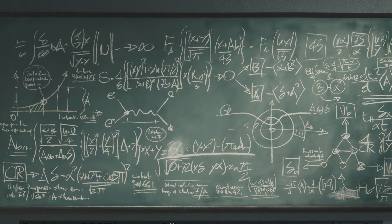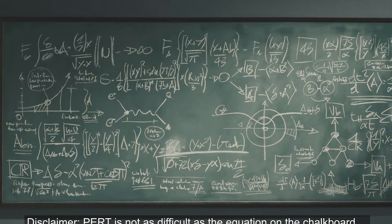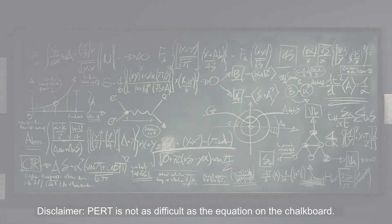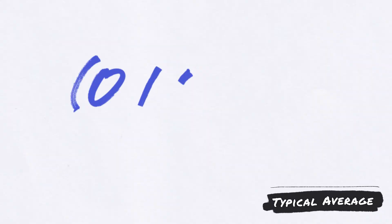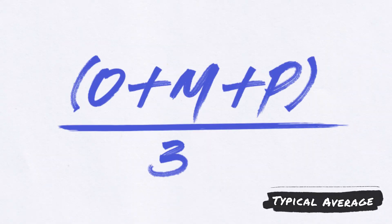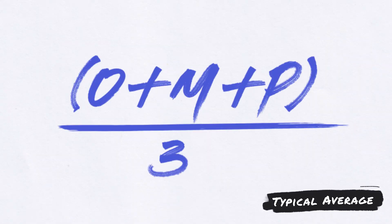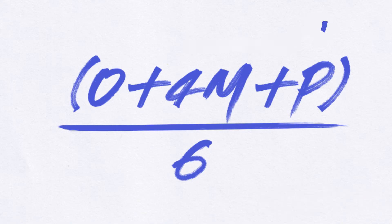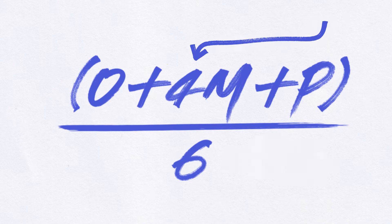One thing to keep in mind is that PERT is based on the beta distribution technique, which calculates a weighted average. A typical average would be O plus M plus P divided by 3. However, in PERT, we use a weighted average of O plus 4M plus P divided by 6, which adds 4 times the amount of weight to the most likely case, and then divides by the number of values present in the formula.